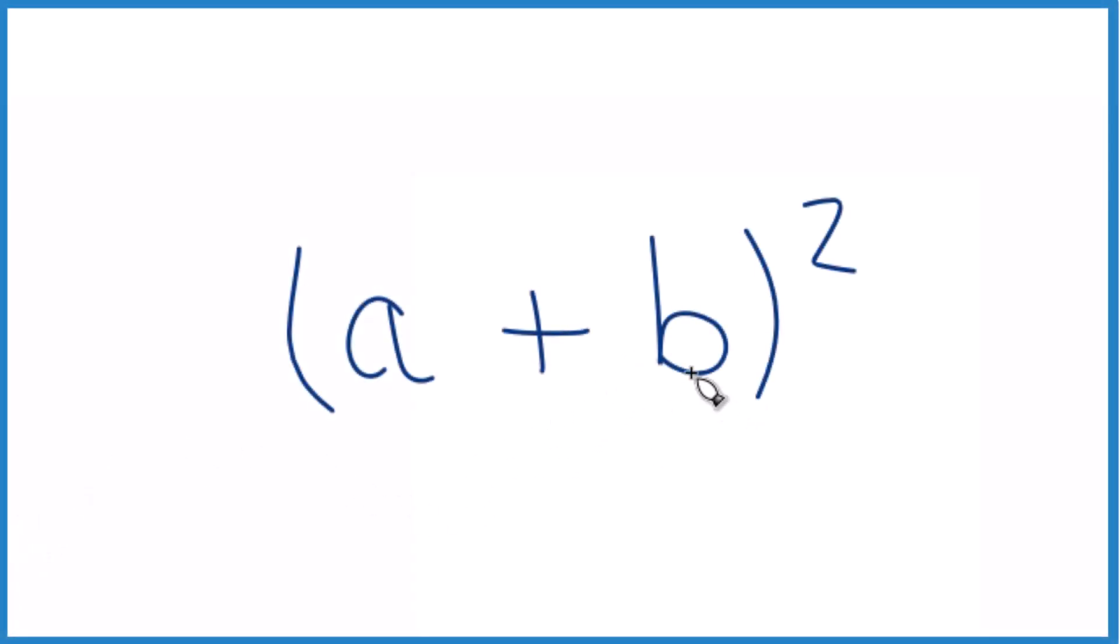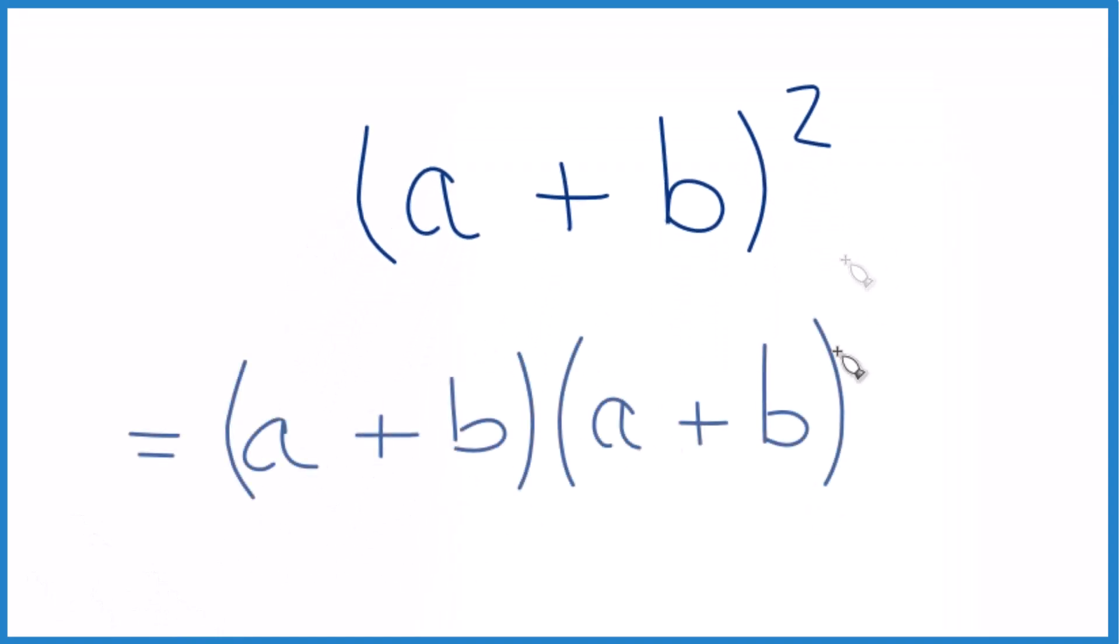Let's expand and simplify the quantity a plus b squared. So we're going to square everything here in the parentheses. Probably the easiest way to do this is to write this out, a plus b times a plus b. So this is the same thing as a plus b squared.